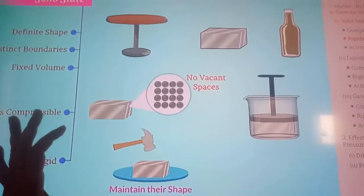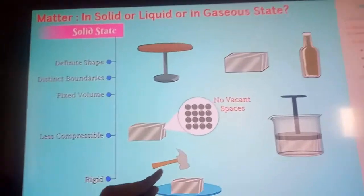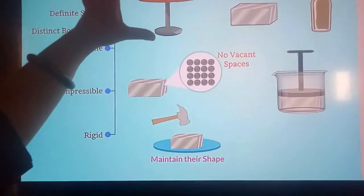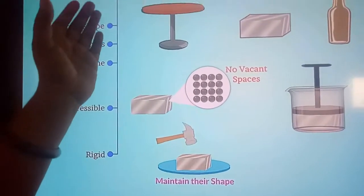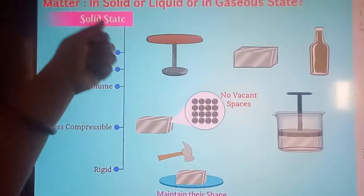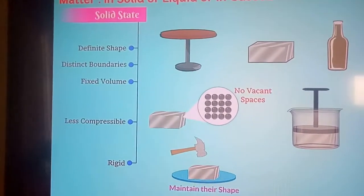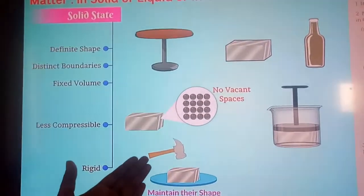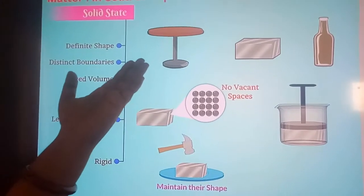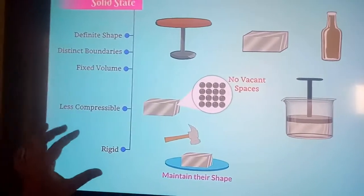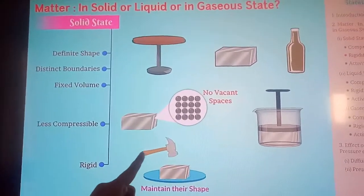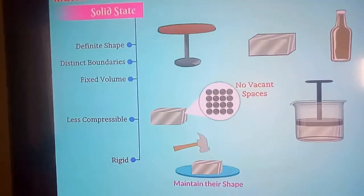Suppose we try to change the shape of a table — the table will not change its shape on its own unless we forcefully hit it with a hammer, and then there's a chance it will break. So rigidity means solids maintain their shape forever unless an external force acts on them.